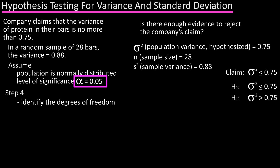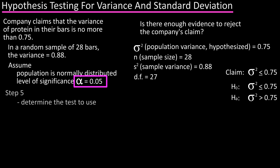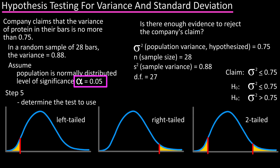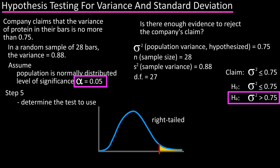Step four is to identify the degrees of freedom, which is n minus one — the sample size minus one — so 28 minus one equals 27 degrees of freedom. Step five is to determine the test to use. Because the alternative hypothesis contains a greater than inequality, this will be a right-tailed test.